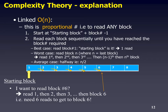Let's look at the linked version. This is called O(N), which means it's proportional directly to the number of blocks in the file. You have to read sequentially: first block, second block, third, fourth, fifth, sixth. So if we have ten thousand blocks, the best case is one read and the worst case is ten thousand. We take an average, so the average reads would be N divided by two. In the case of ten thousand, that would be five thousand reads to reach the middle of the file.